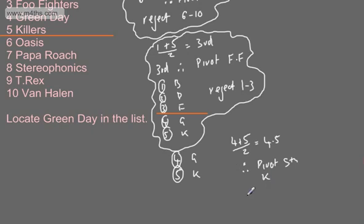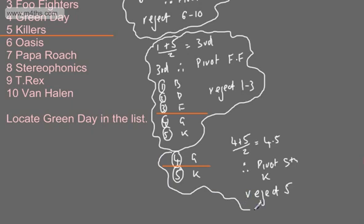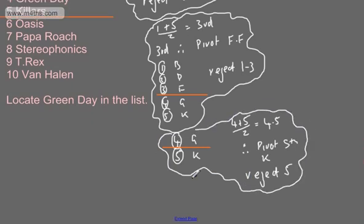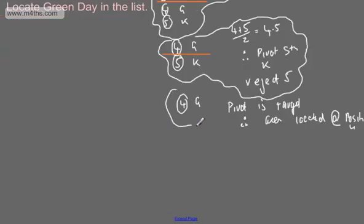So we reject 5, as quite clearly Green Day is above it. That leaves me with only one value. After we've rejected the Killers on that particular iteration, the only pivot left is our target. Now all that's left in the list is position 4, and we can say pivot is target. Therefore, Green Day located at position 4 - end of search. We've carried out those iterations and found Green Day at position 4.